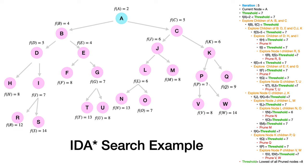In iteration 5 with threshold = 7, we traverse again. Now node I is expanded because F(I) = 7 equals the threshold. We get children R and S with F(R) = 12 and F(S) = 14, far above threshold. Node G, child of E, is also pursued since F(G) = 7, giving children T and U whose F(n) values exceed the threshold.